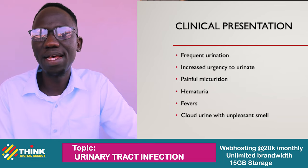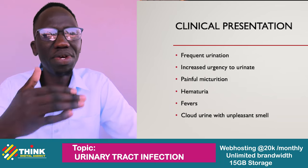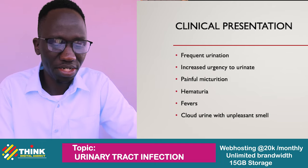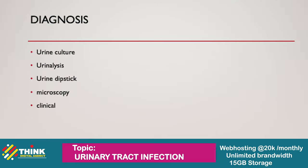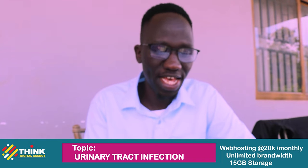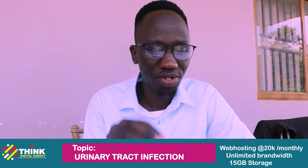For diagnosis, they can use what we call a urine dipstick, where a stick containing different test properties is dipped into your urine and different color changes within the strip are observed. They can also observe the urine under a microscope to identify what particular organism is causing the cystitis. There is also clinical diagnosis based on the signs and symptoms we have seen, most of which are particular to cystitis.